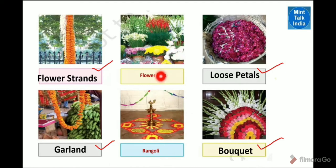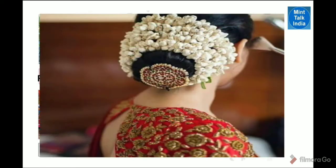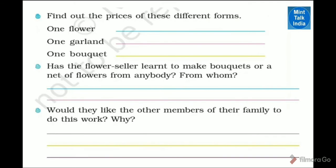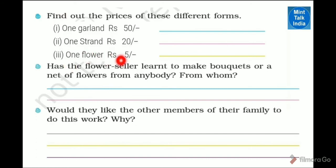There are also flower pots and potted plants. Some sellers don't sell cut flowers — you have to go to another shop or nursery. Find out the prices: one flower is 5 rupees, one lari strand is 20 rupees, and one garland is 50 rupees — depending on how many flowers are in it.